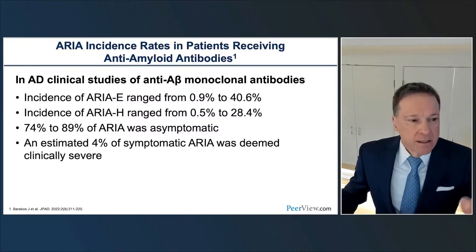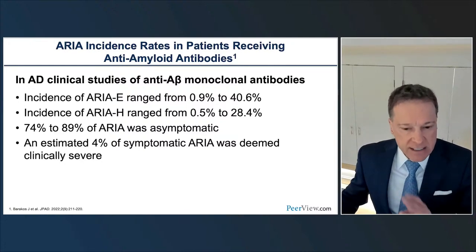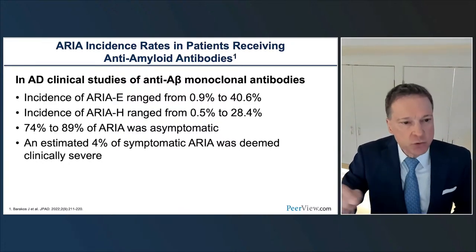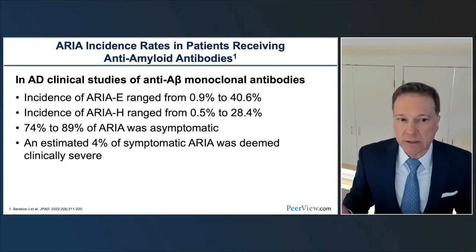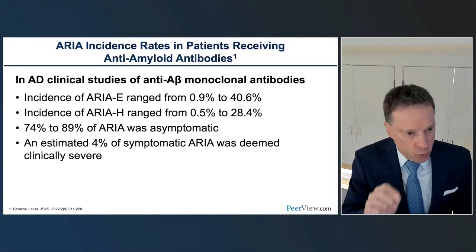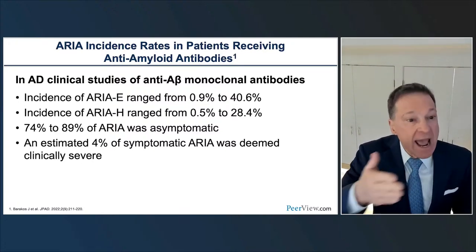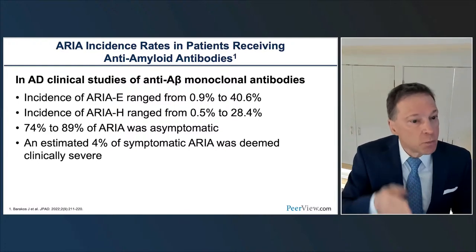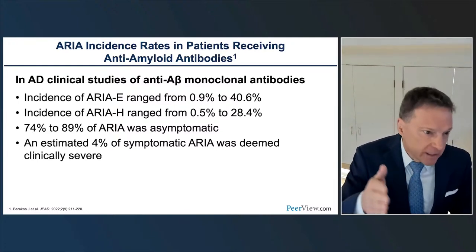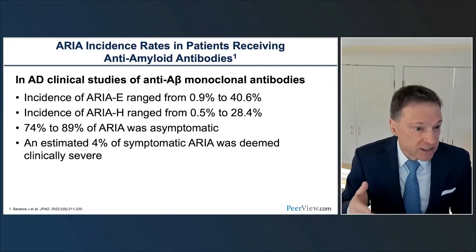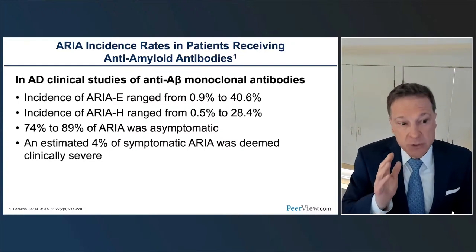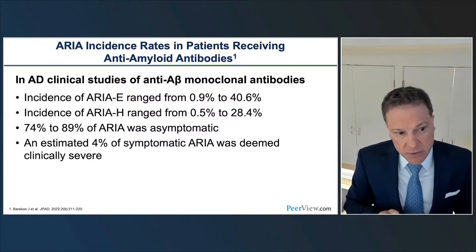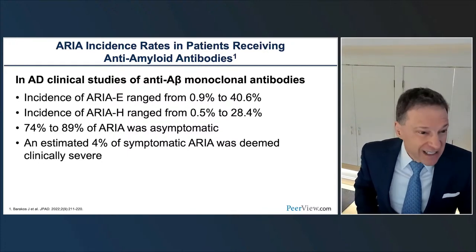Here's a key point: 74% to 89% of ARIA is asymptomatic. The vast majority of these imaging changes are asymptomatic—changes will take place in the patient's brain with no clinical symptomatology. That is why imaging is critical. Routine surveillance imaging is performed as patients are given drugs over many months or years of treatment. If abnormalities develop, we as radiologists must communicate those to clinicians so they can adjust dosage or suspend treatment. When ARIA is symptomatic, the majority of symptoms are mild or moderate—only about 4% of symptomatic ARIA was deemed clinically severe.